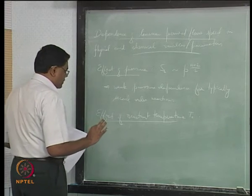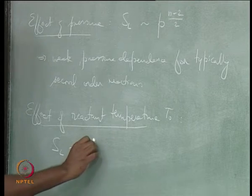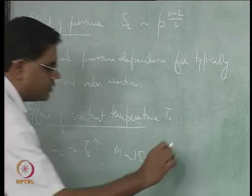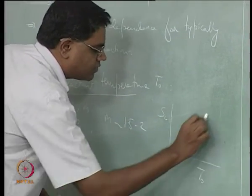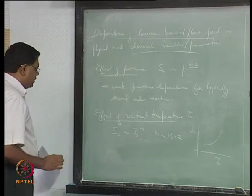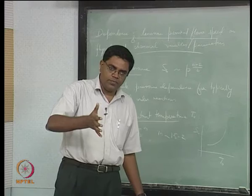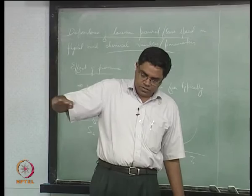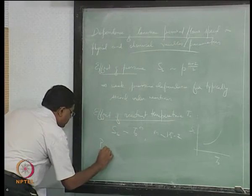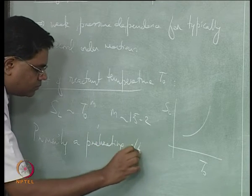As far as T0 is concerned, the gross effect is that SL goes as T0 to the power m, where m is around 1.5 to 2. So if you look at SL versus T0 you get curves that rise accordingly. This is mainly a preheating effect — the reactants approach the flame, pass through the preheat zone, and the temperature rises from T0 up to the reaction temperature in the reaction zone.